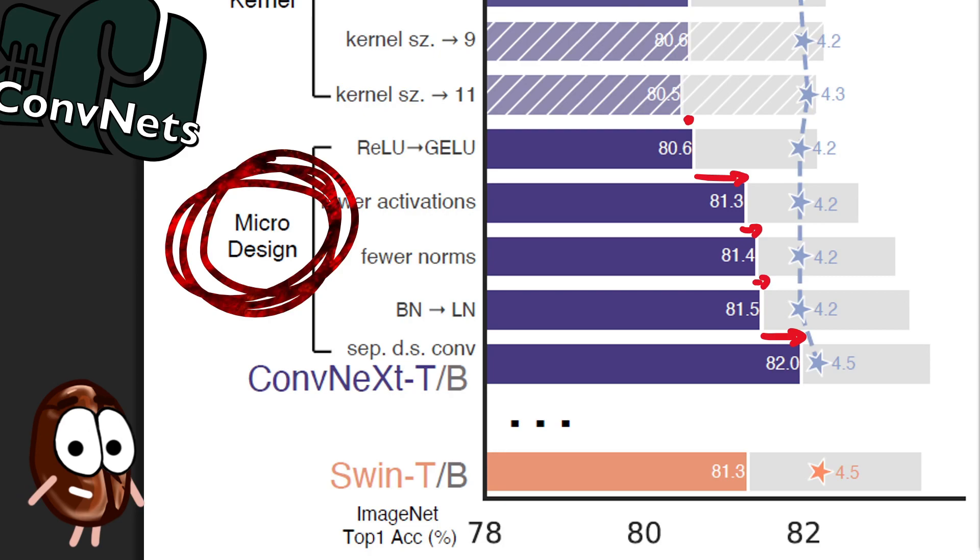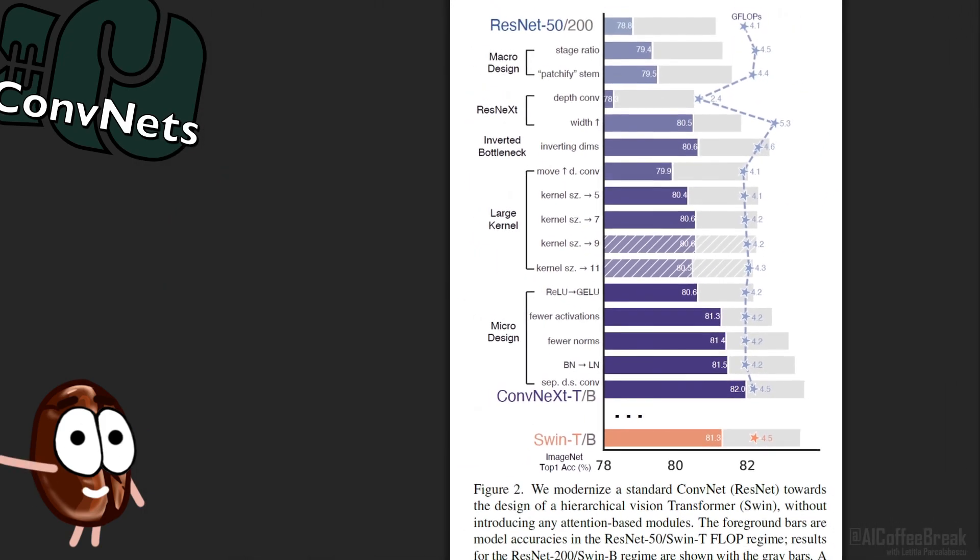And these results are comparable, because the SWIN transformer plays in the same league in terms of computation and size. If you're curious to know how this fares in the big model league, you just have to look at the grey bars in the figure, where they start from a resnet 200 and add all these steps with similar gains.